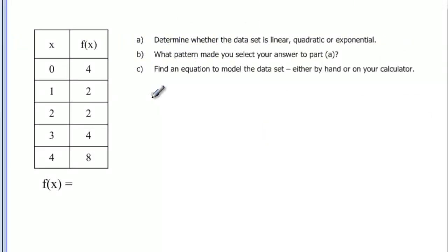So our first example here, we want to determine whether it's linear, quadratic, or exponential, and then see what patterns we see and find the equation. X is changing by one all the way through, and this looks like I might have subtracted two or divided in half, but then here I didn't divide in half or subtract two, I actually added zero.